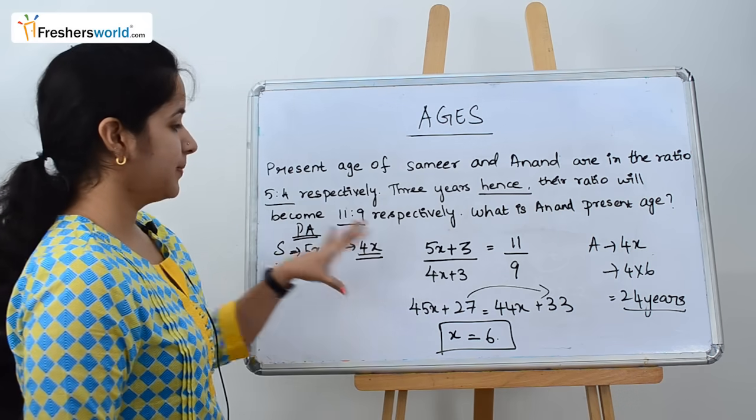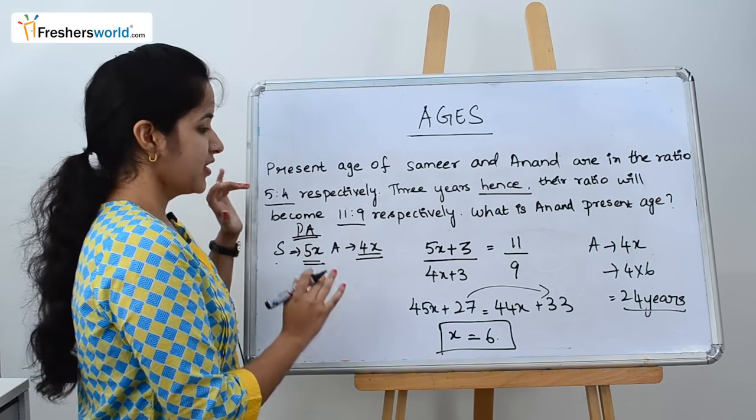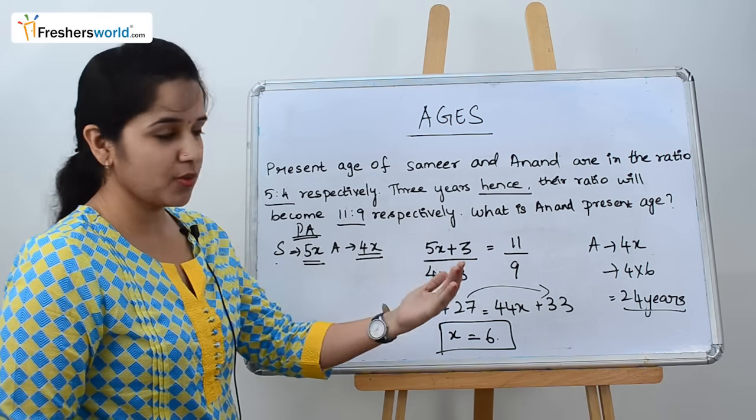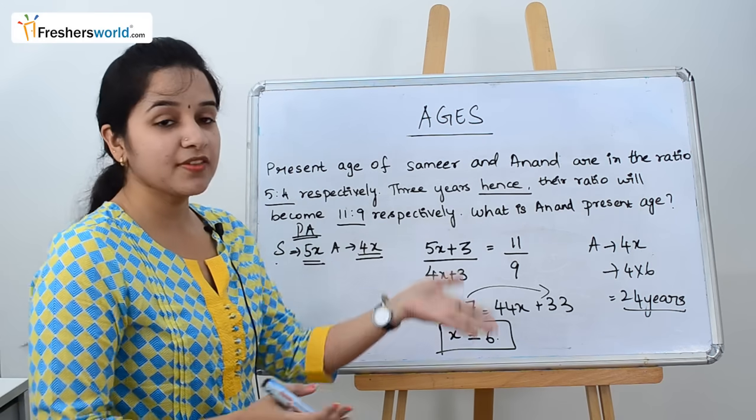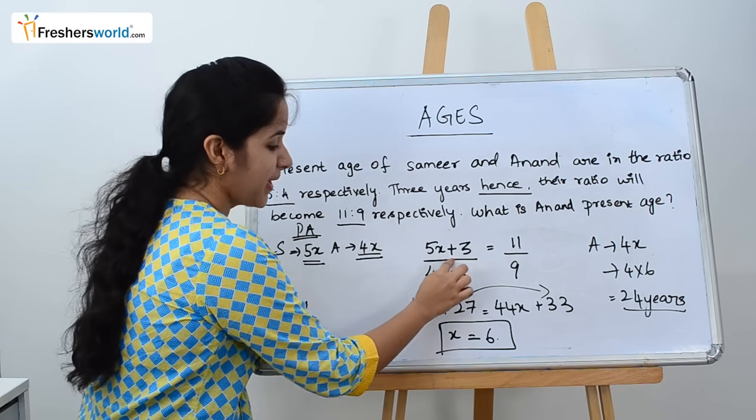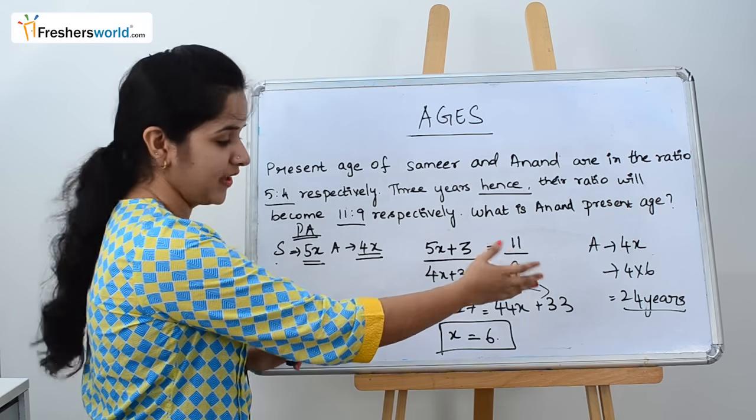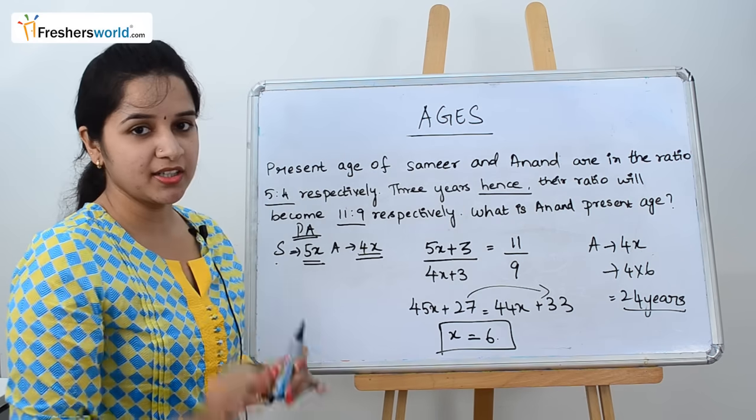In this type of problem, if they give it in ratio, check if they've given the future one, or sometimes they would have given 5 years before. Then you have to subtract it and equal it to the ratio they've given. If you do that, you can easily find X.